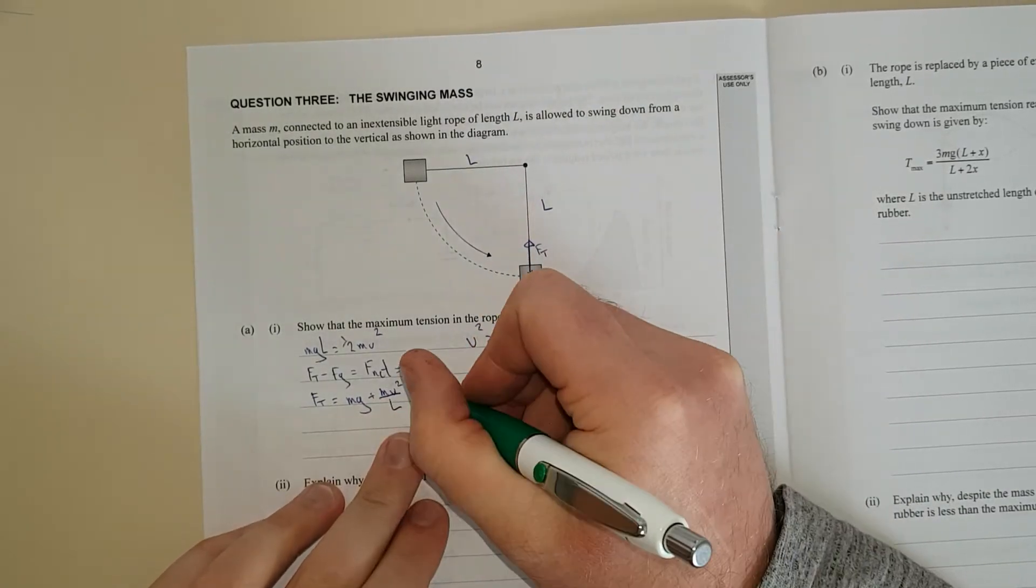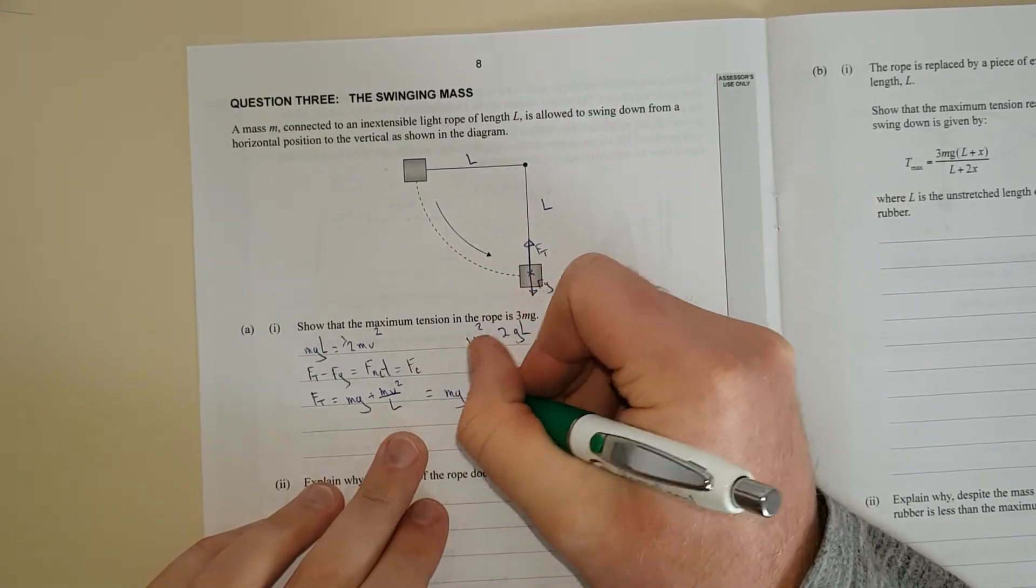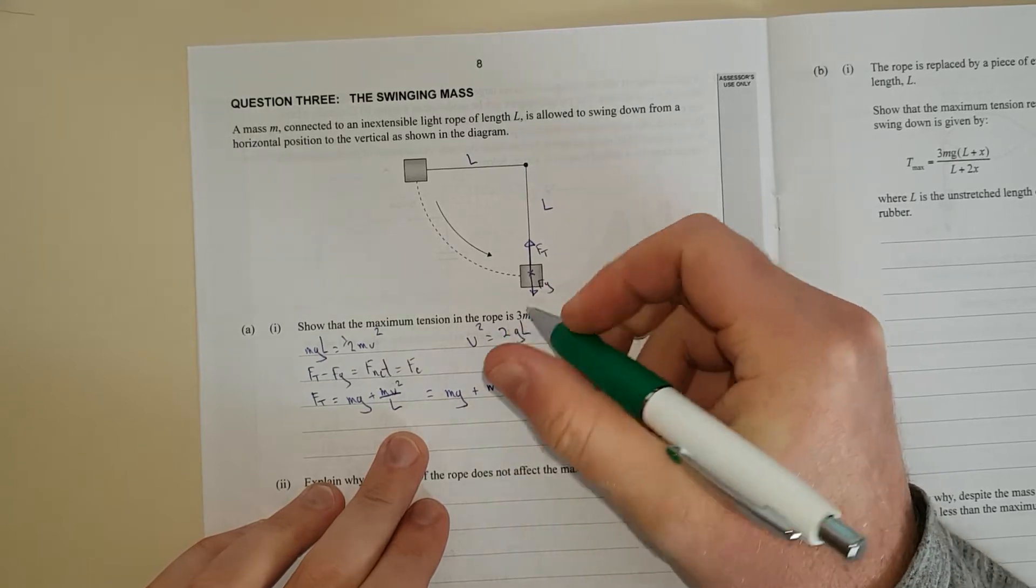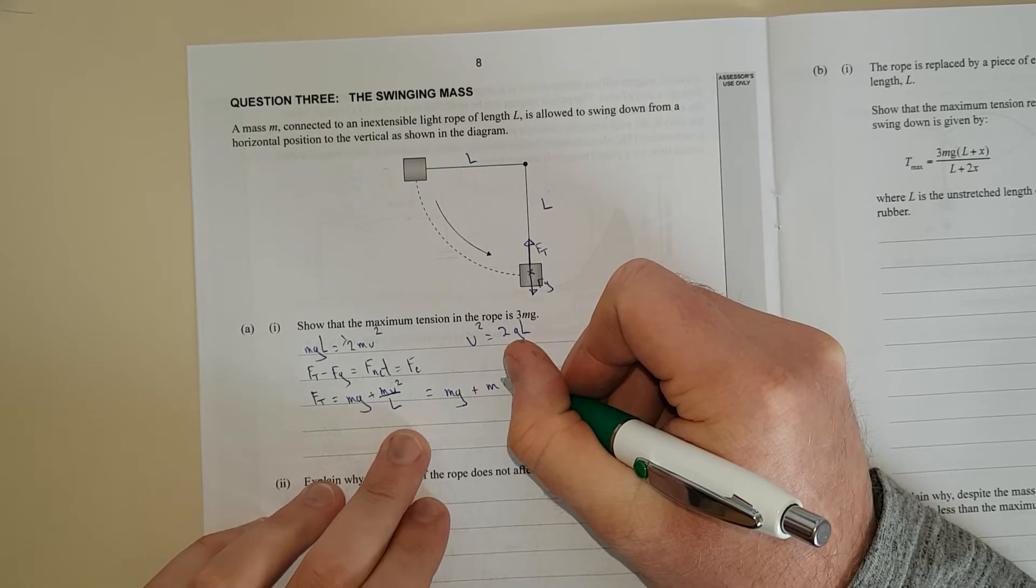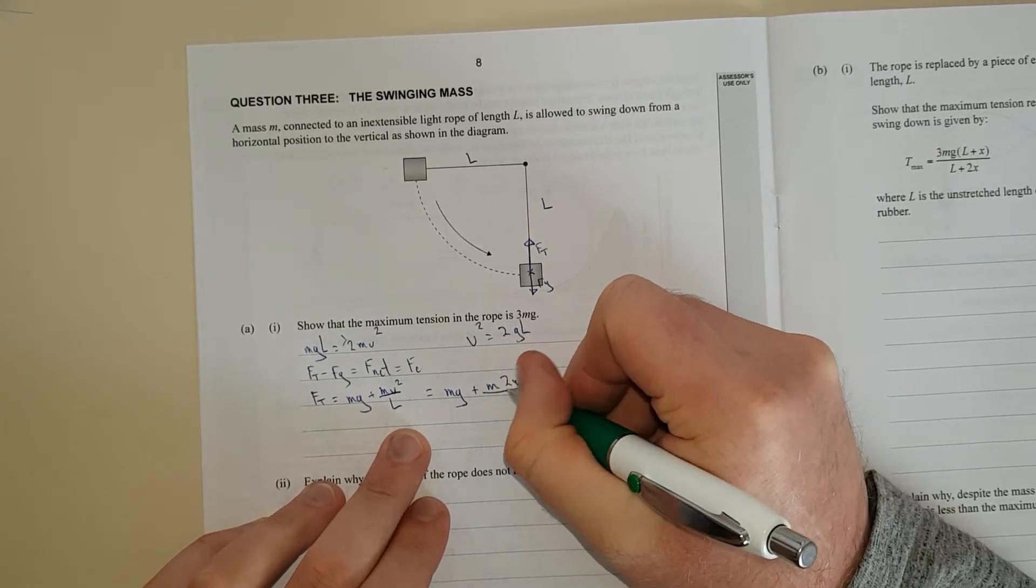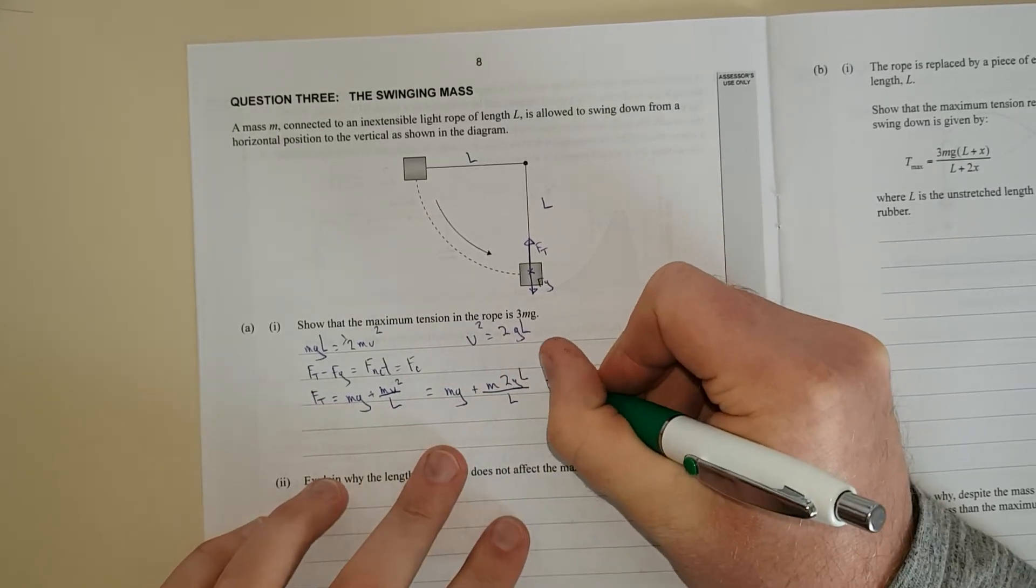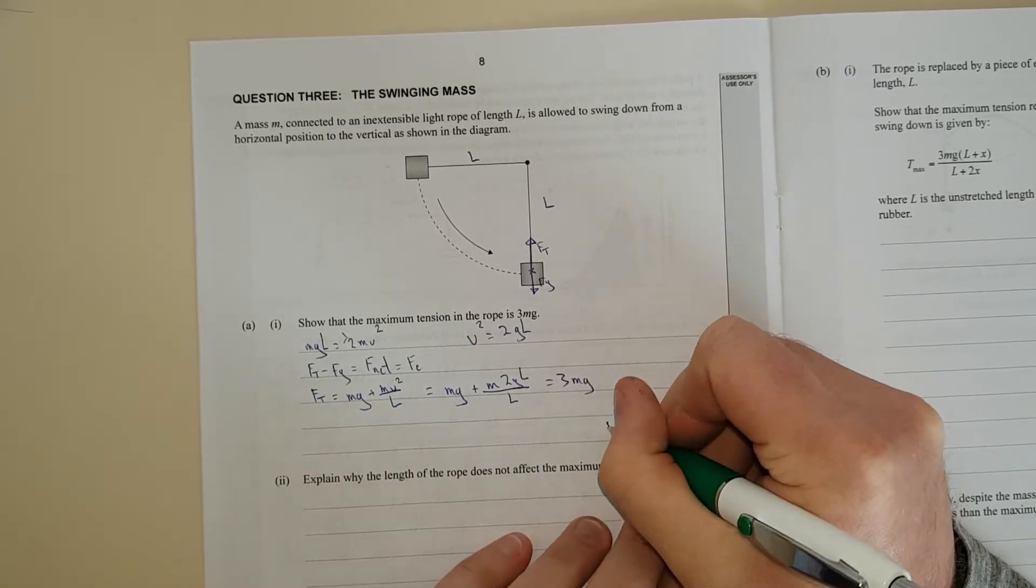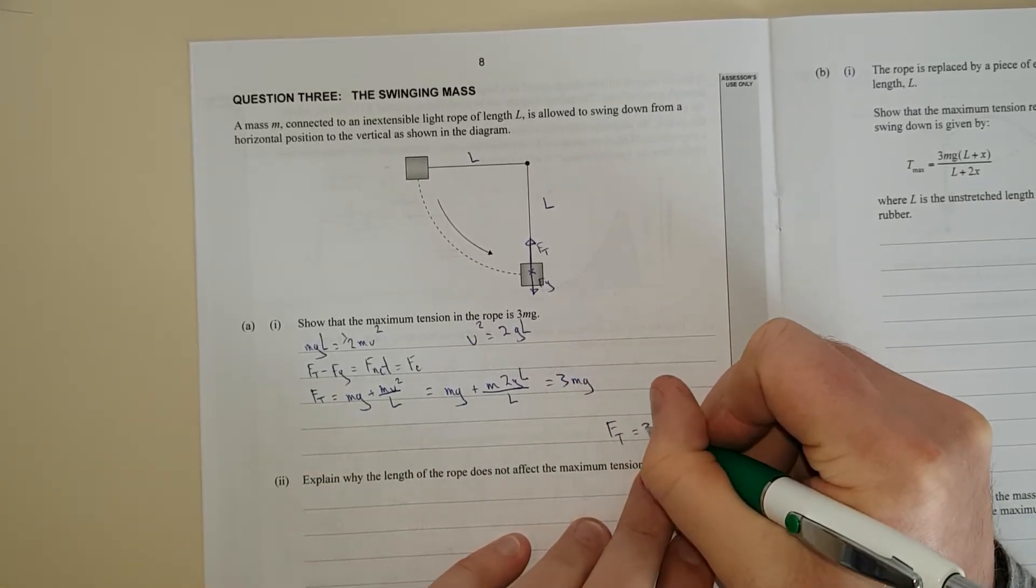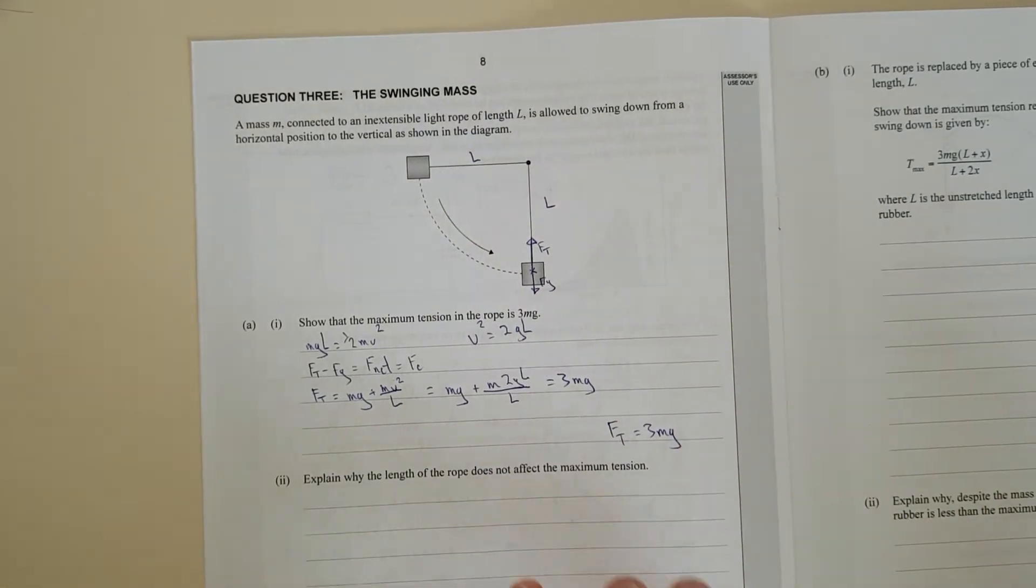Now we're trying to figure out in terms of just mg, so we're going to use this formula here and substitute it into the v squared. So v squared is going to be equal to 2gl. Now we'll substitute that into here. So we've got mg plus m times 2gl over L, and as we can see this equals 3mg. Ft equals 3mg.